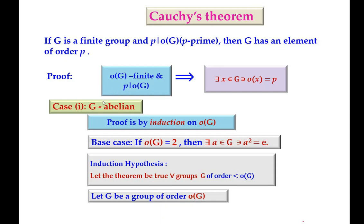We are going to prove this theorem by considering two cases: one is when G is abelian and then when G is non-abelian. So first we will consider G to be abelian. What is given to us is that the order of G is finite and P divides the order of G. What we need to establish is that there exists one element X in G such that the order of X is P.